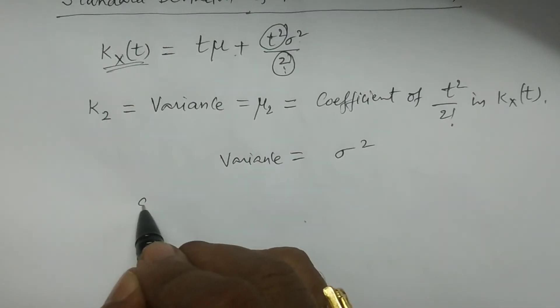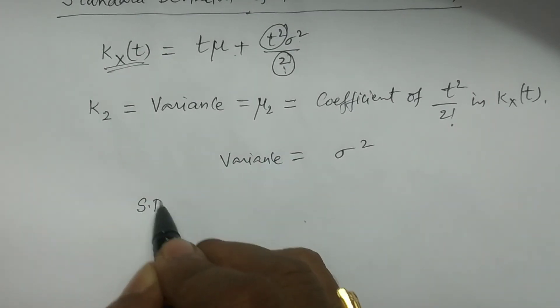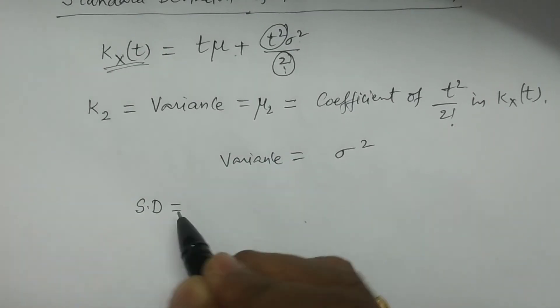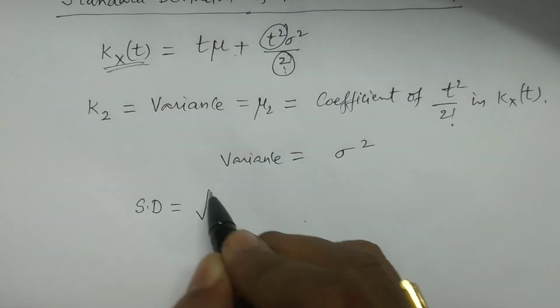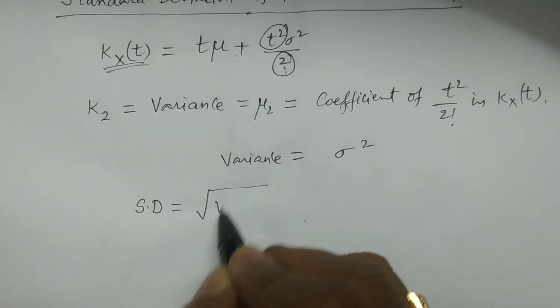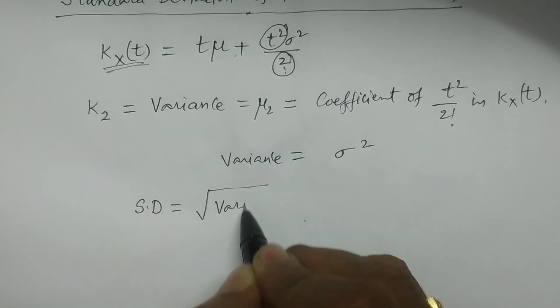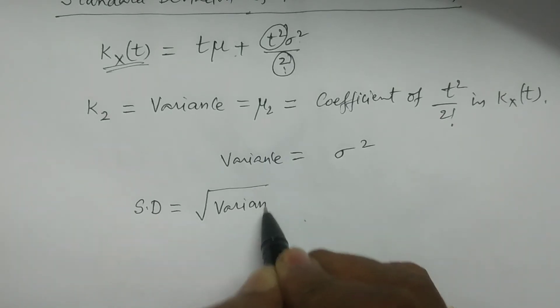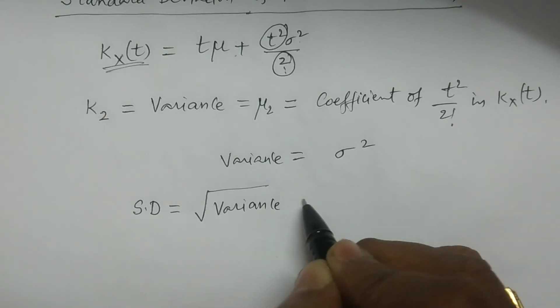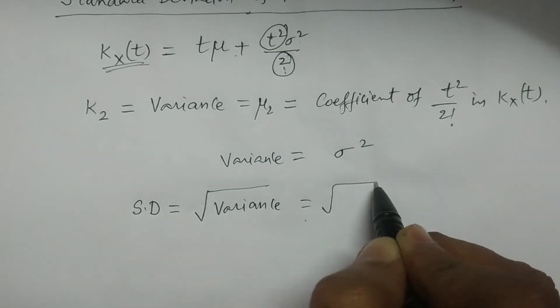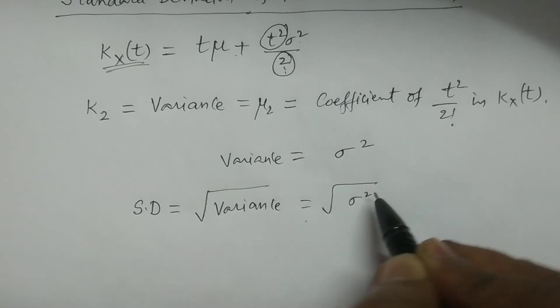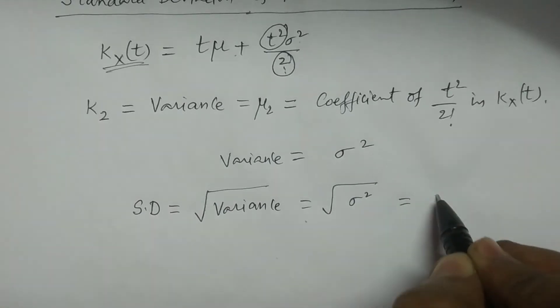Now it is very simple to calculate the standard deviation. Standard deviation is nothing but the square root of variance, and the variance is σ², so the square root of σ² is σ.